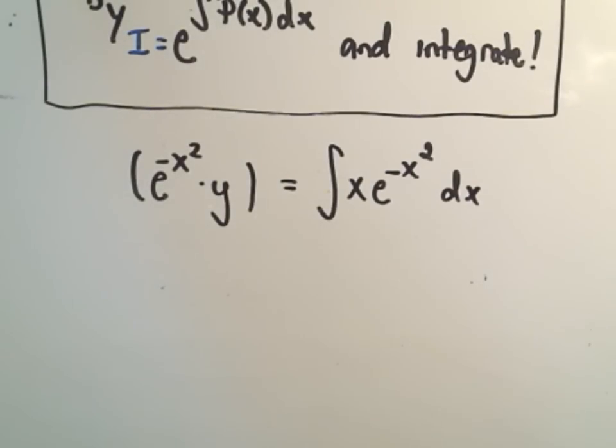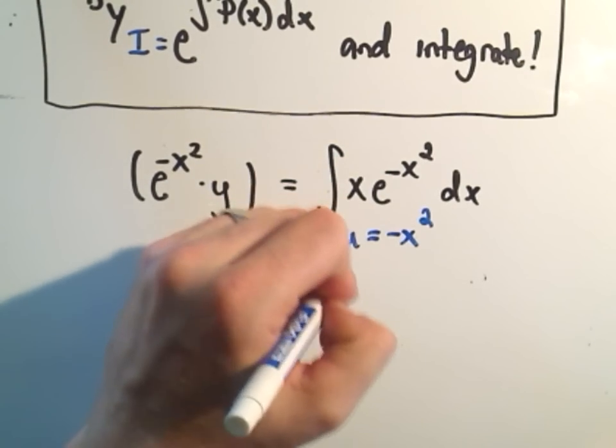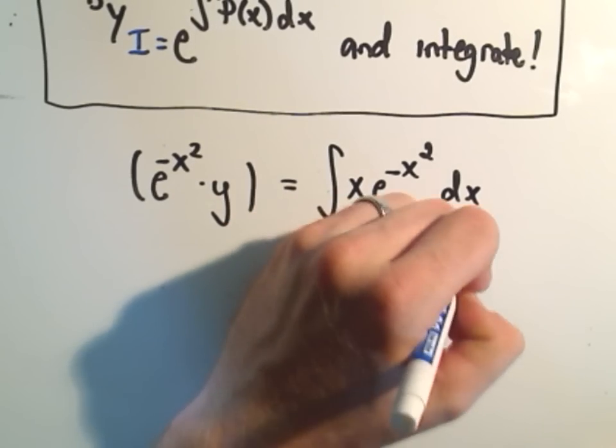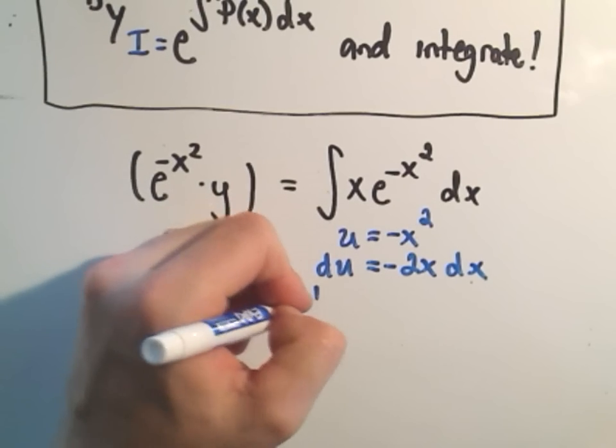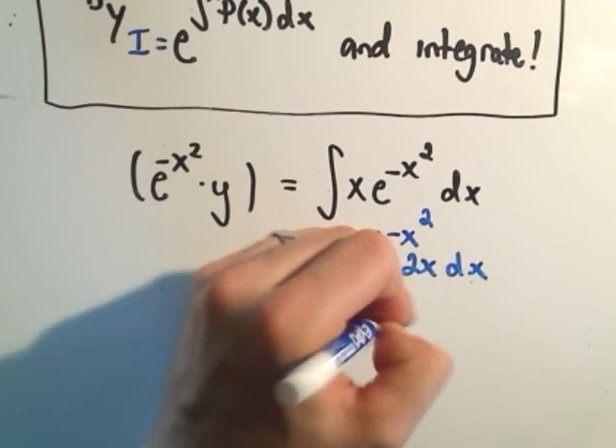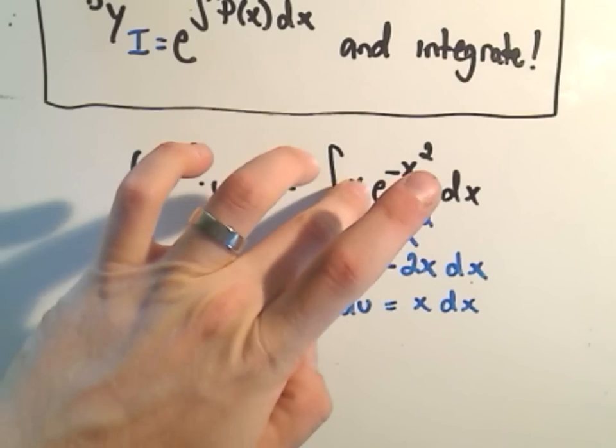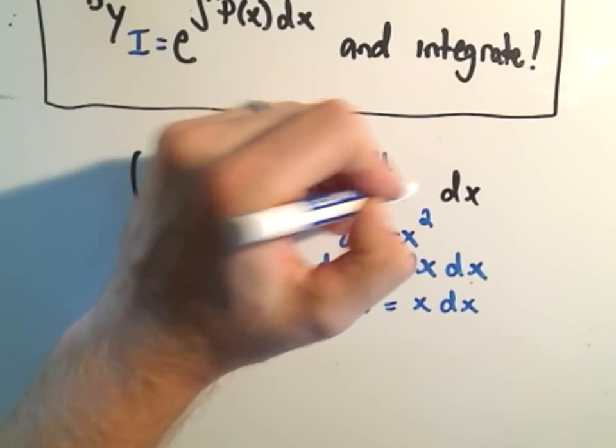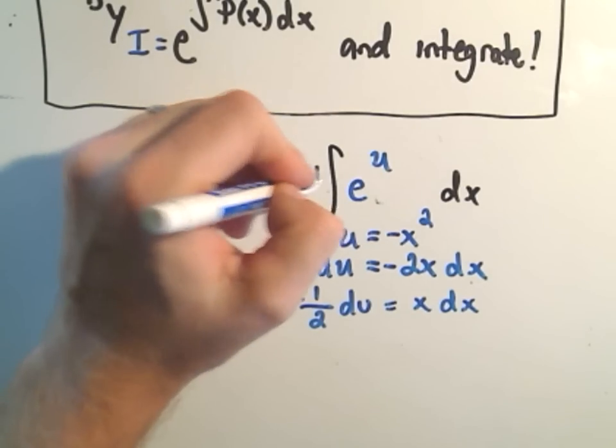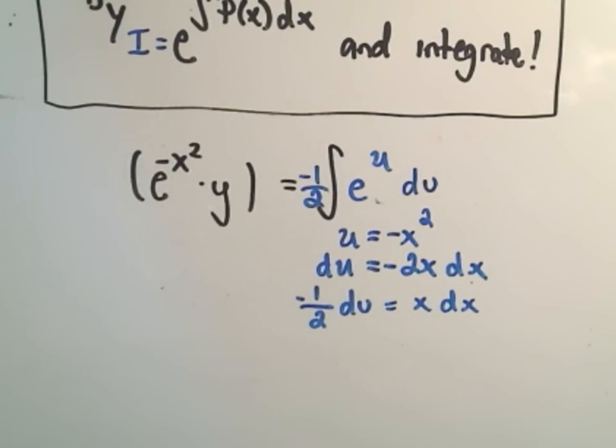So on the right side, we can just do this with a u substitution. It says if we let u be negative x squared, well then du will be negative 2x dx. The way I think about it is we want to replace an x dx. So if I divide both sides by negative 2, I'll get negative 1 half du equals x dx. So then if I integrate that, if I relabel all of that, the e to the negative x squared will turn into the e to the u. And then the x dx that's left over, I can take the 1 half and my dx will now turn into a du.